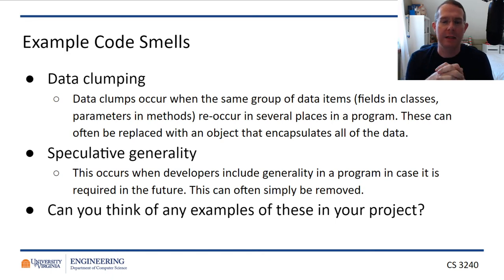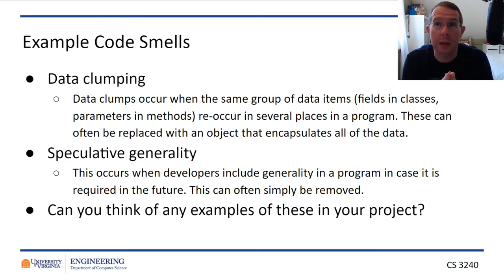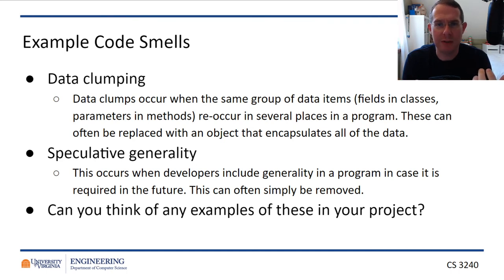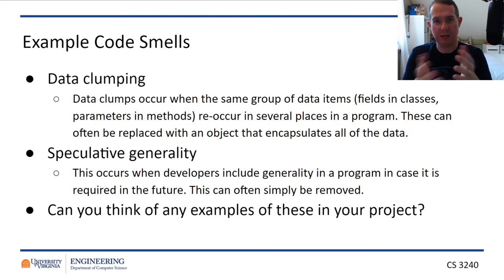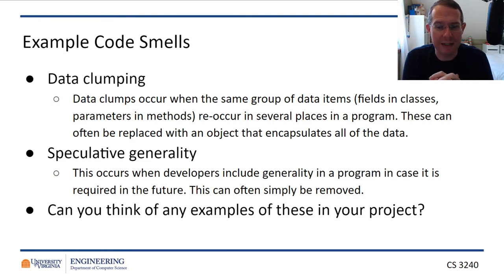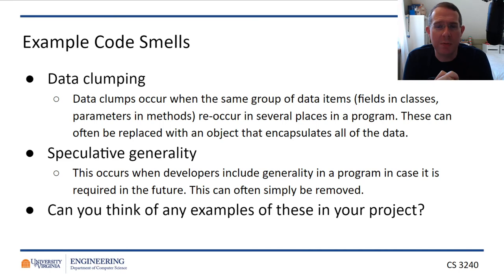Data clumps occur when the same things keep appearing together. For instance, if you have GPS coordinates and every function you pass them to takes both latitude and longitude separately, you could make a GPS coordinate class — or use one that already exists — that has latitude and longitude encapsulated in it, so you're not disassociating those two variables and always having to change them together. Speculative generality is kind of when you over-engineer — like making a general person class that could be anything in the system. You might have some of these in your project; duplicate code is almost guaranteed.